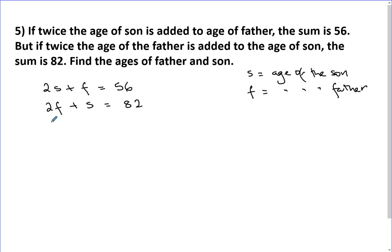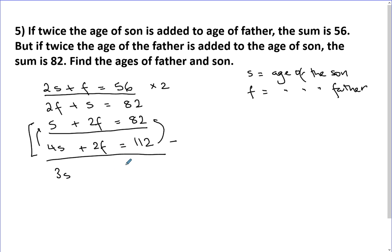I'm just going to rearrange this so I've got the S and F. So I've got S plus 2F equals 82. So then I've got this one and that one. I'll multiply that by two so I've got two F's. So I've got 4S plus 2F equals 112. And then I'll take these, and because the signs are the same, I'm going to minus. But again, I'm going to do it that way. So 4S minus S is 3S. 3S equals 112 minus 82 is 30, so S equals 10.